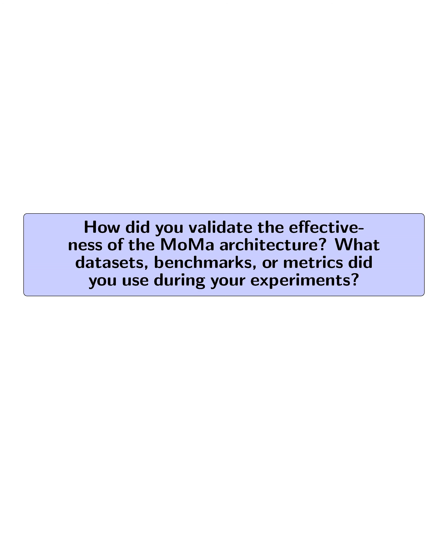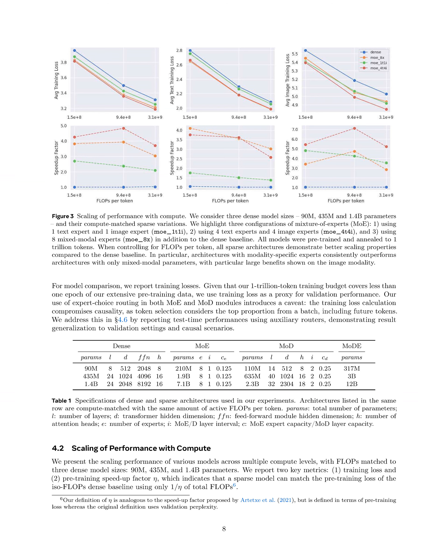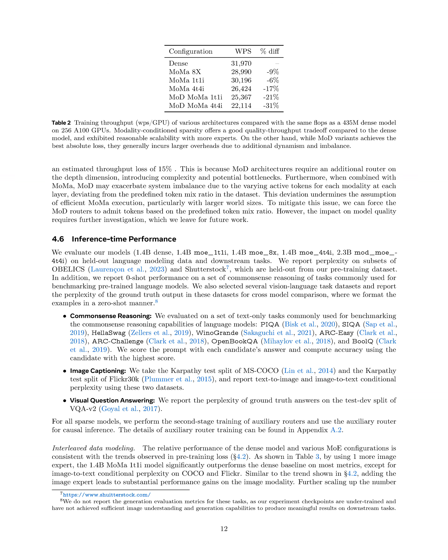How did you validate the effectiveness of the MoMA architecture? What datasets, benchmarks, or metrics did you use? The effectiveness of MoMA was validated through extensive experiments using various datasets and benchmarks. We reported training losses as a proxy for validation performance, comparing MoMA models against dense baselines and other sparse variations. Specifically, we evaluated models on held-out language modeling data and downstream tasks, including common-sense reasoning tasks like PIQA and HellaSwag, as well as image captioning datasets such as MS-COCO and Flickr 30K. We also measured perplexity, particularly conditional perplexity for both text-to-image and image-to-text tasks. Results indicated that MoMA significantly outperformed the dense baseline on most metrics, demonstrating its effectiveness in interleaved data modeling.